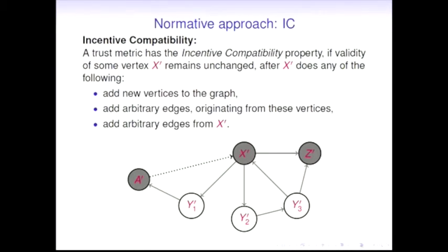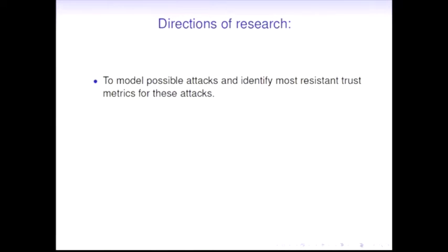The second property is incentive compatibility. Here we count the act of signing someone else's certificate, like creating an edge, as an act of voting. This is similar to the previous property, but we state that X can do certain actions without bearing any costs - create a forged identity without anybody signing it costs nothing, and creating edges from himself to these forged identities costs nothing. We may want our metric to be immune to this type of trivial attack. It states that if X does any of these actions to improve or increase its validity for A, these actions shouldn't change it.